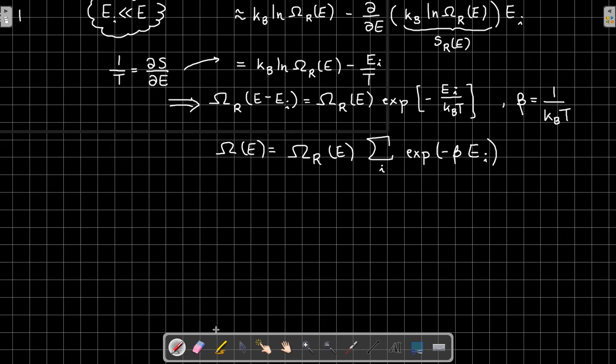Now we just have to invoke one final postulate of statistical physics, and that is the equal a priori probability postulate, which essentially says the microstates of a system with the same energy must be equally probable. So if I have a microstate i and microstate j and they both have the same energy, then P_i is equal to P_j.